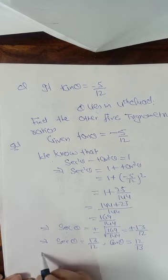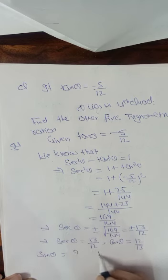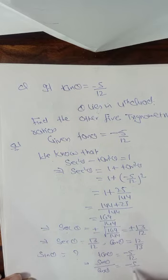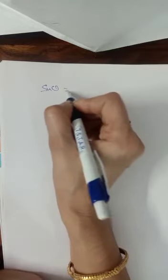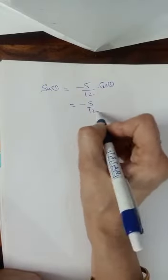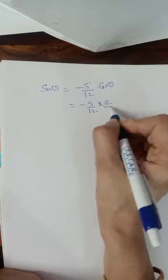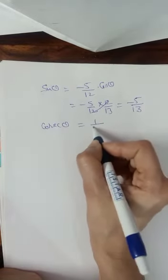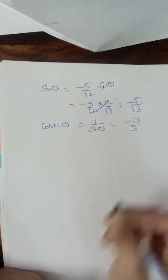Now we have to find the value of sin θ and cosec θ. tan θ is given as −5/12, which means sin θ / cos θ = −5/12. So sin θ = −5/12 × cos θ = −5/12 × 12/13 = −5/13.